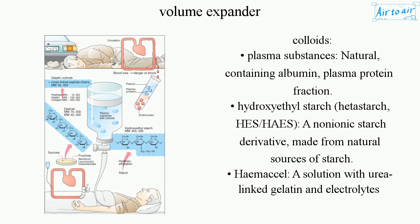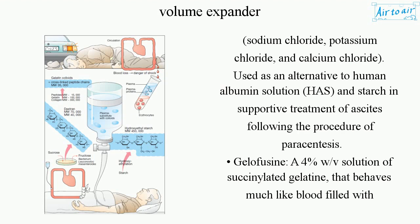Haemaccel: a solution with urea-linked gelatin and electrolytes — sodium chloride, potassium chloride, and calcium chloride — used as an alternative to human albumin solution (HAS) and starch in supportive treatment of ascites following the procedure of paracentesis.